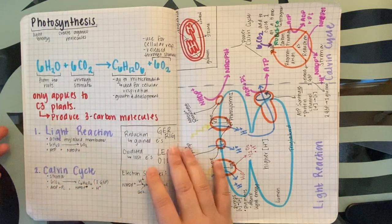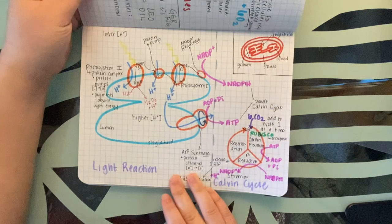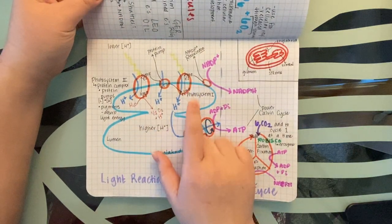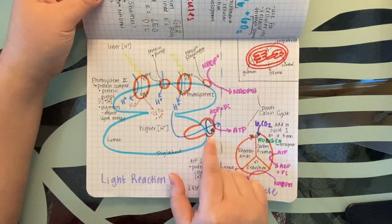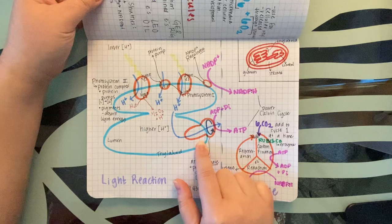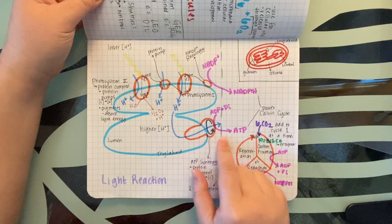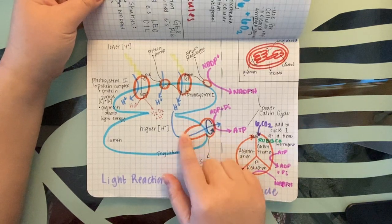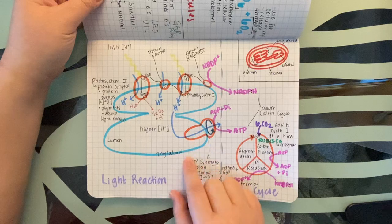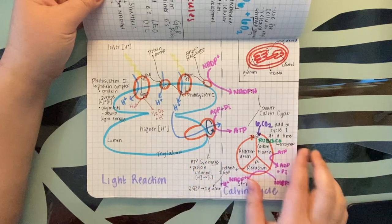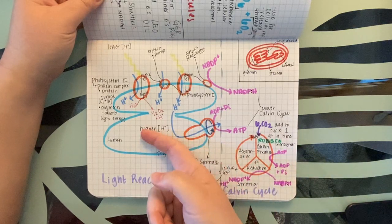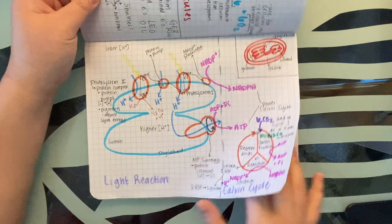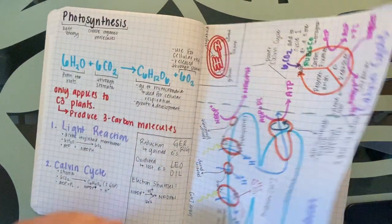We're going to see a lot of similar processes to photosynthesis — we'll have an electron transport chain, and this process uses ATP synthase to phosphorylate ATP, which is known as chemiosmosis. In cellular respiration we're just going to be going backwards instead of forwards like we did for photosynthesis.